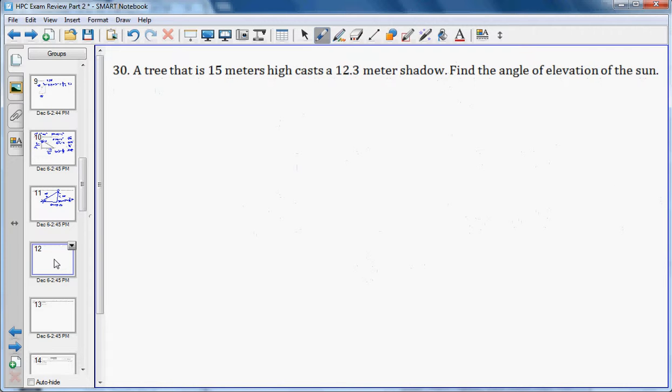Now we have a tree that is 15 meters high. So a tree, 15.3, excuse me, 15 meters high. And then it has a 12.3 meter shadow. The shadow is on the ground. We're not measuring a shadow through the air. So the shadow is what's on the ground. And it wants to find the angle of elevation, meaning you need to find this angle right here.